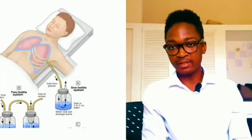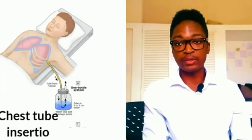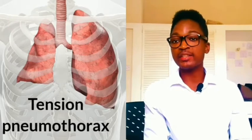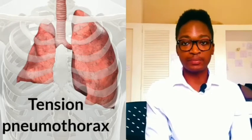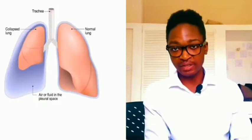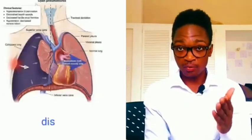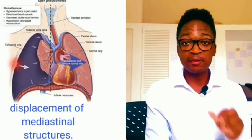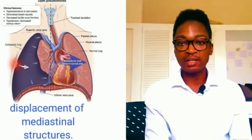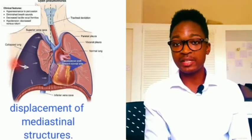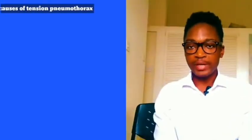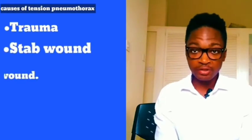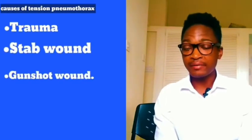You want to insert a chest tube. It's a condition called tension pneumothorax where air is trapped in the pleural space under positive pressure, and it will displace mediastinal structures and affect cardiopulmonary function. It can be caused by trauma like in this case — stab wound, gunshot, rib fractures.